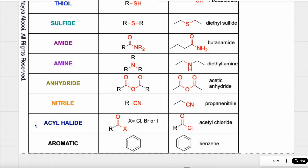In organic chemistry, we will use acyl halides a lot. If we see a C double bond O attached to a halogen such as chlorine, bromine, or iodine, this functional group is called an acyl halide. This example — with a carbon attached to the carbonyl — is called acetyl chloride.